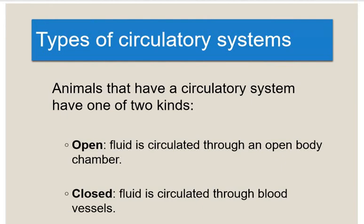Next are the types of circulatory system. There are two types: open circulatory system and closed circulatory system. In an open circulatory system, blood vessels are not present and the fluid moves freely through the body rather than being confined to vessels.